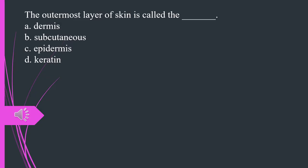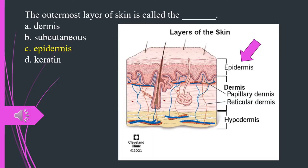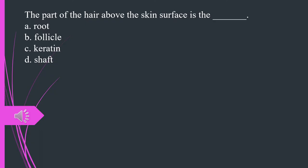The outermost layer of skin is called what? A. Dermis. B. Subcutaneous. C. Epidermis. D. Keratin. The answer is C. Epidermis.